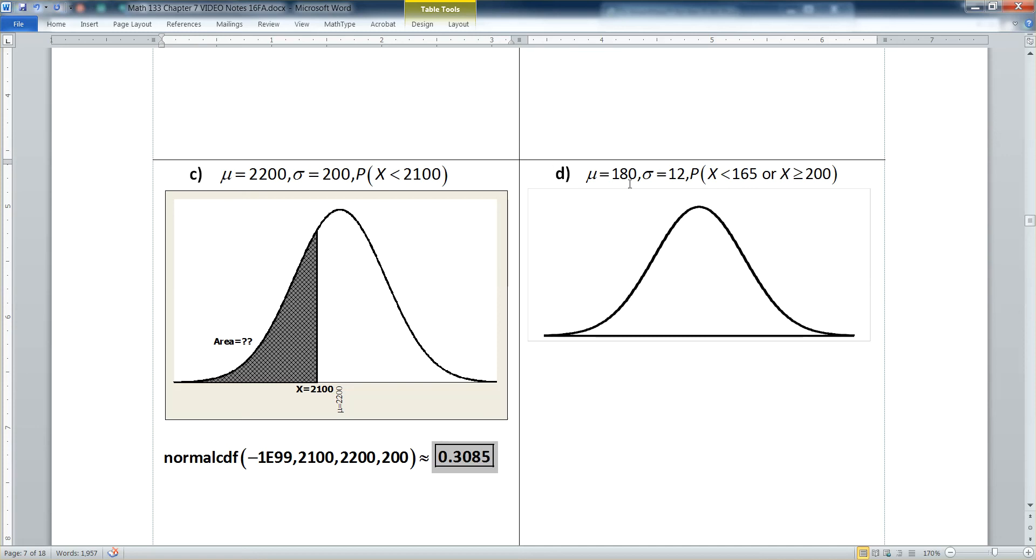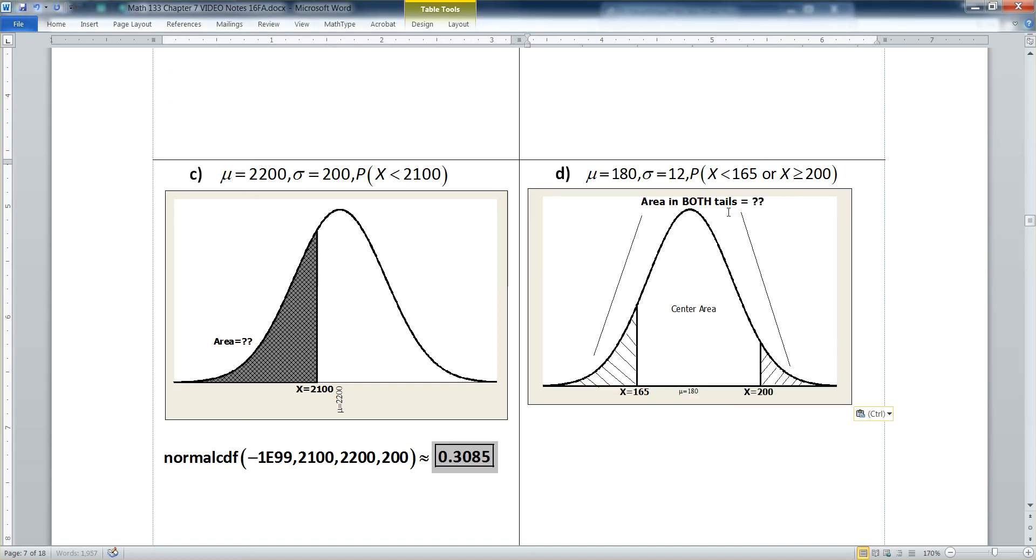All right, let's do one more. Now this one's going to be the most complicated. The mean is 180. Sigma is 12. And I want the chances that X is less than 165. So that's a number over on the left. I want to be less than that or greater than 200. Well, 165 is a little bit more than a standard deviation away because the standard deviation is worth 12. And 165 is 15 away. 200 is 20 away. So that's about a standard deviation and a half or so, a little bit more. Okay, so we want the area in both tails. So the key is that word or that's in there. See that? We learned in chapter five that a probability involving or means you have to add. So that's what we're going to have to do. We could add the two tails together.